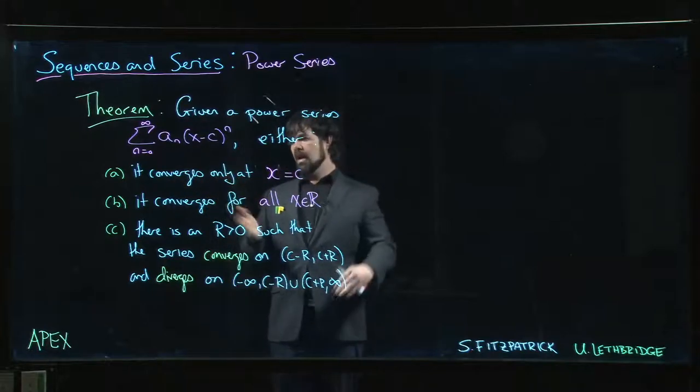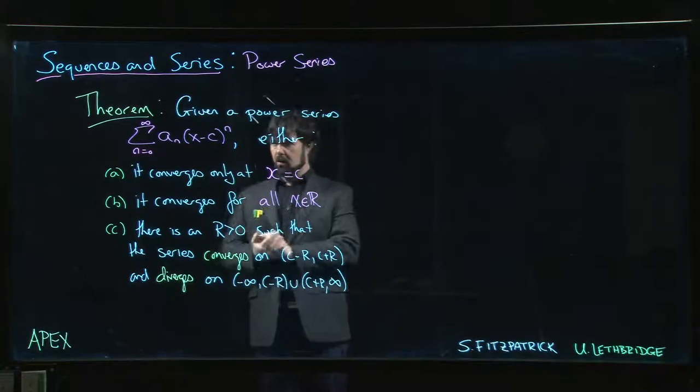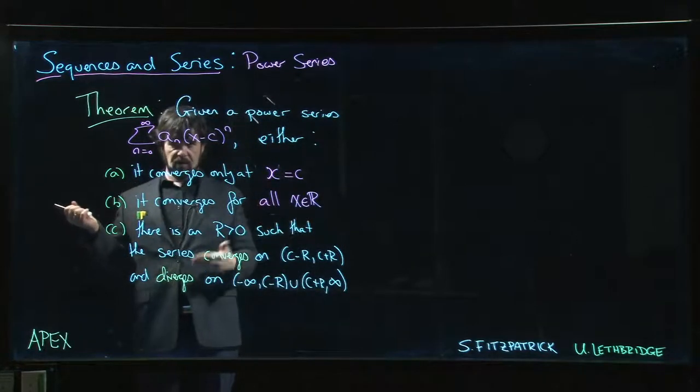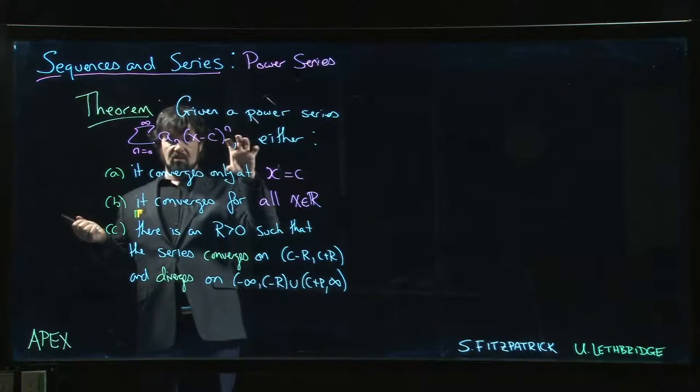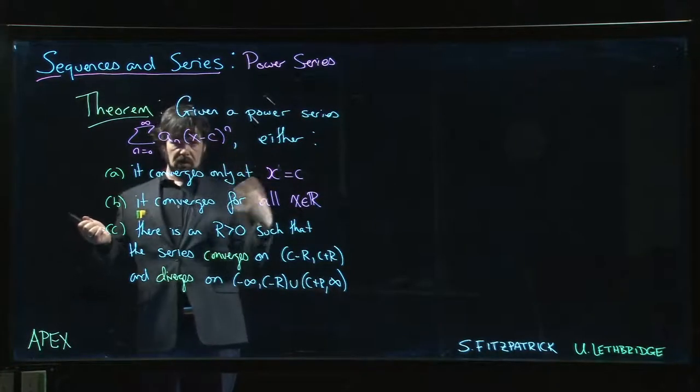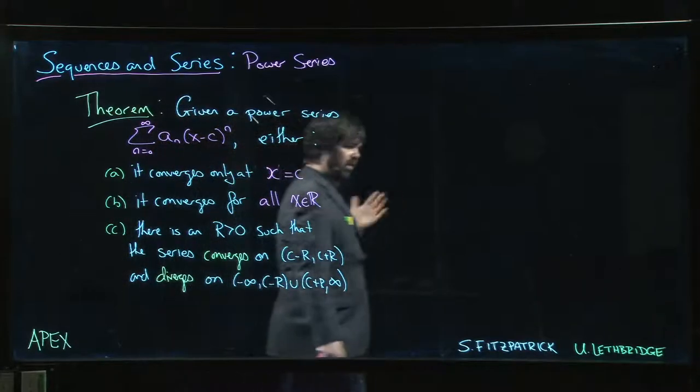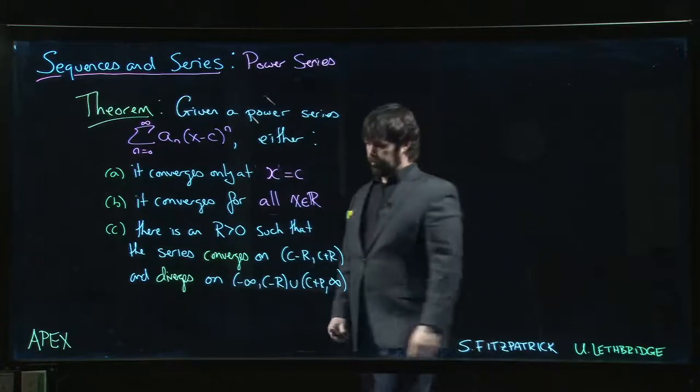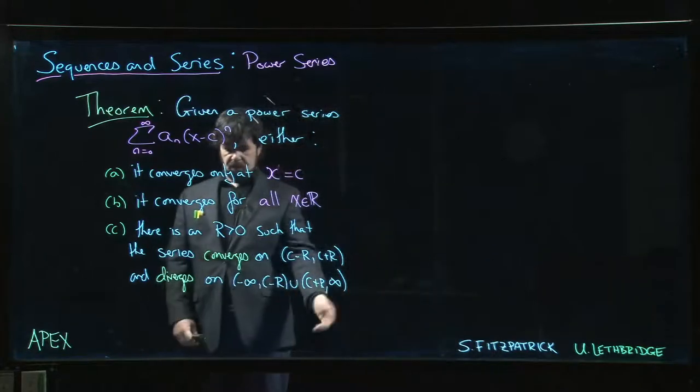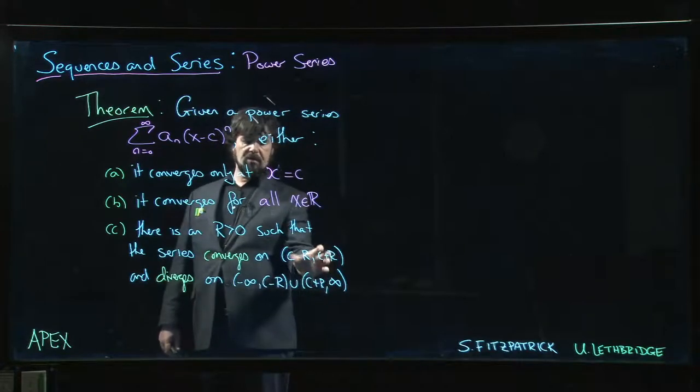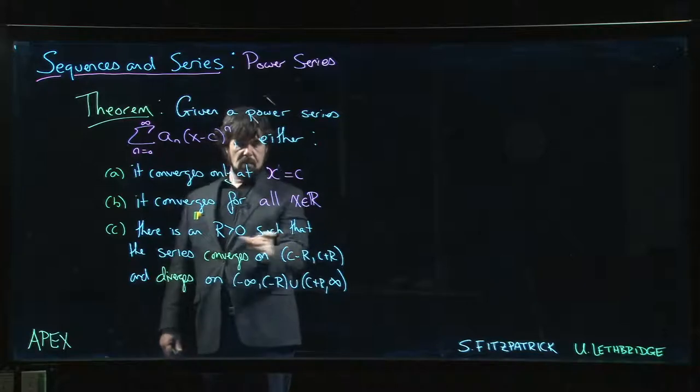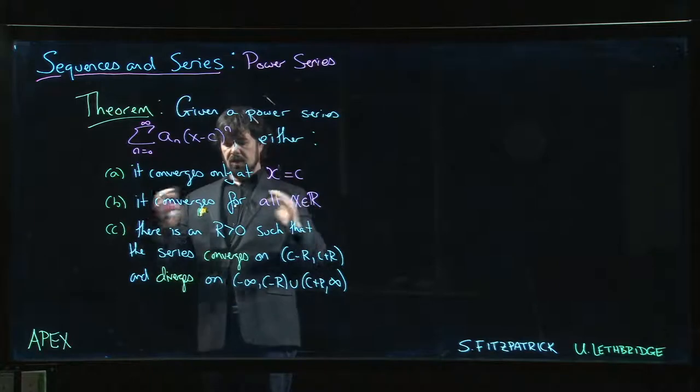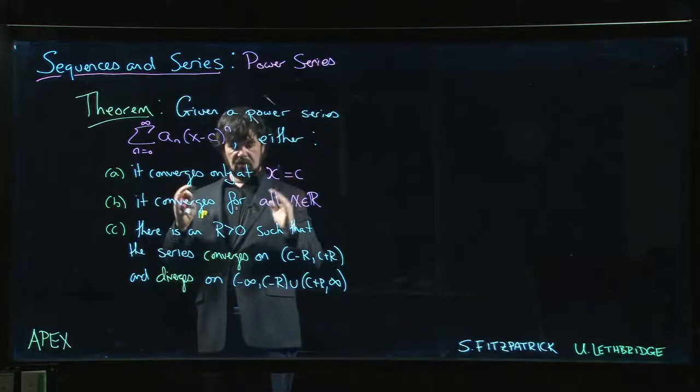And then there's the intermediate scenario where the series converges for some values of X and not for others. We saw that with the geometric series - if you think of X to the n with simply a_n equal to one for all n, you just get a geometric series. When does that converge? It converges between minus one and one. So in general, you'll find that there will be some interval centered at this number C. You can move a little bit in one direction or the other and all the X values in that interval give you a convergent power series, but as soon as you move outside the interval it's gonna diverge.